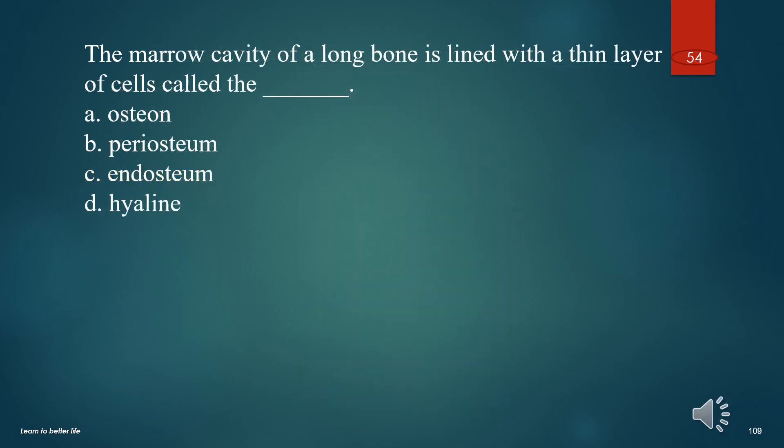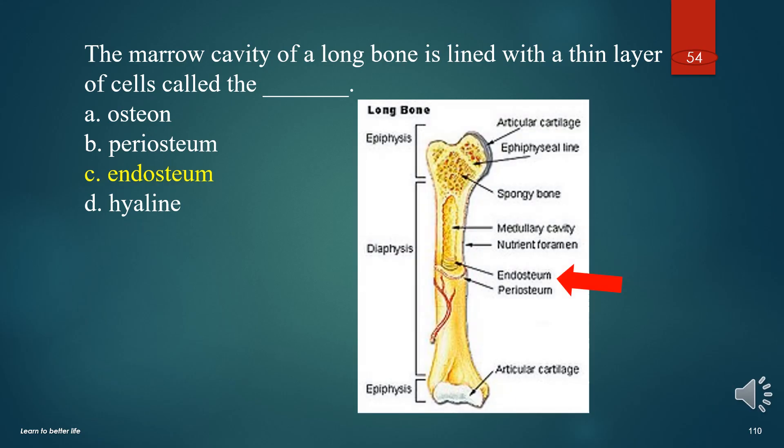The marrow cavity of a long bone is lined with a thin layer of cells called the what? A. Osteum. B. Periosteum. C. Endosteum. D. Hyaline. The answer is C. Endosteum.